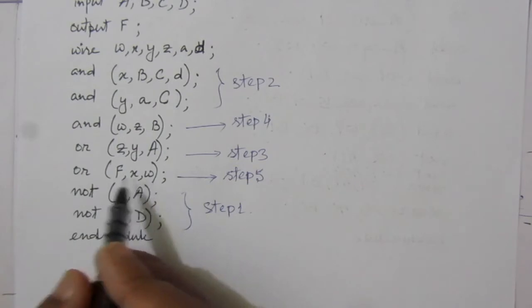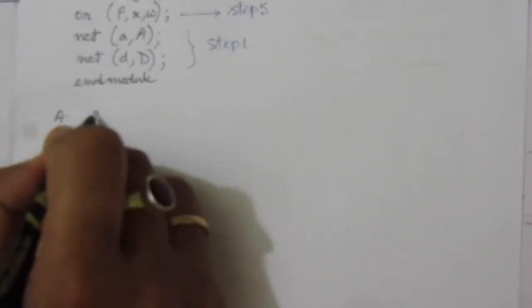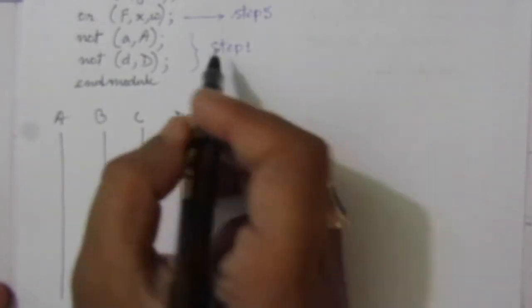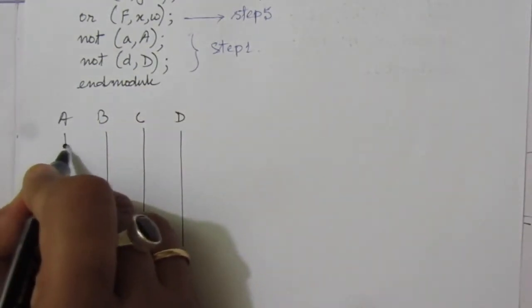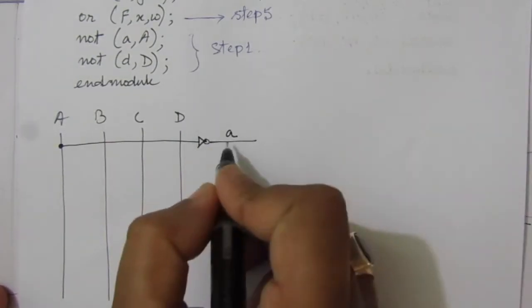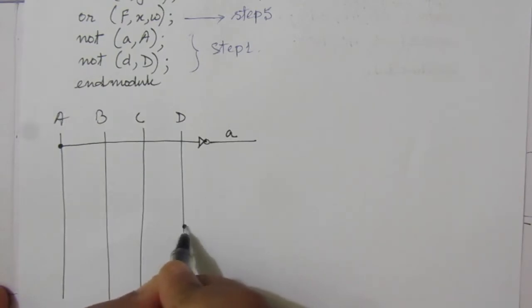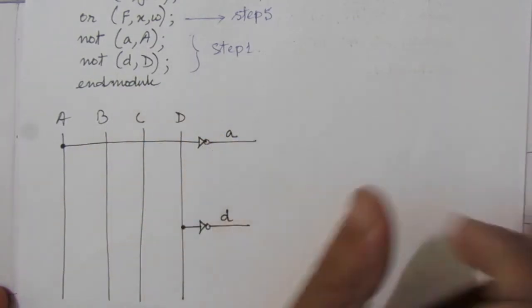First we draw the input lines. We have four inputs: A, B, C, and D. In step one, we find small a by taking the complement of capital A — take a line from A, use an inverter, and here we get small a. Similarly, small d is the complement of capital D, so we use another inverter on D and here we get small d. Step one is complete.